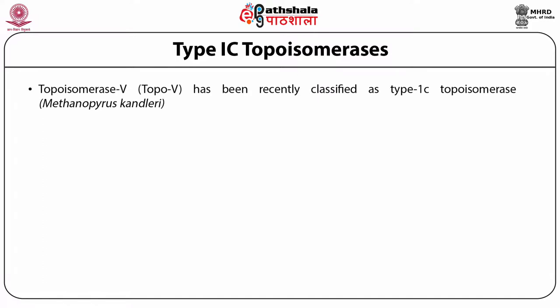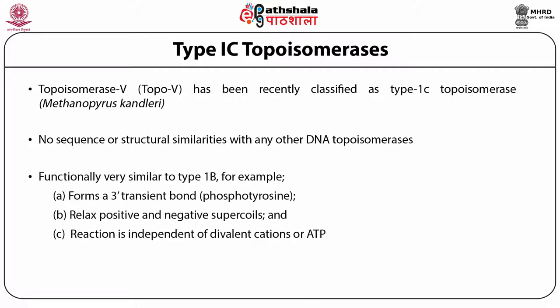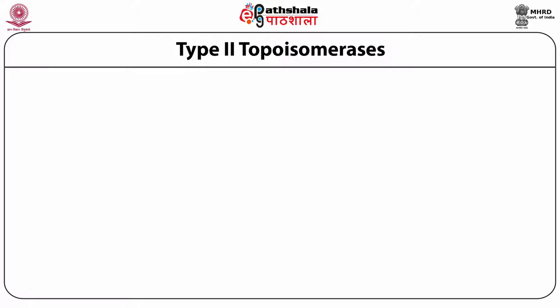Type 1C topoisomerases are recently discovered and named. Initially found in Methanopyrus kandleri, topoisomerase 5 has since been found in different bacterial species. Surprisingly, there is no sequence similarity between type 1C and any other known topoisomerase. However, mechanistically and functionally they are very similar to type 1B — they create a 3' transient phosphotyrosine bond, can relax both positive and negative supercoils, and the reaction is independent of ATP and divalent cations.